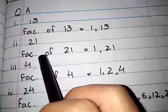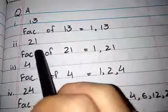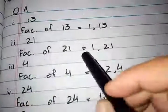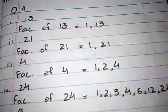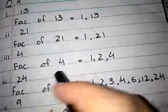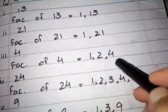Twenty-one is also a prime number, so its factors are 1 and 21. Next, factors of 4 are 1, 2, and 4.